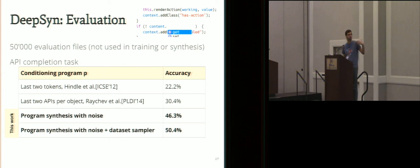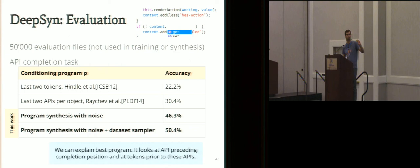The model that we synthesized is far more precise. With program synthesis and noise handling, we actually guess about half of the APIs. These are very complicated APIs to predict in JavaScript - it has APIs declared in the current process we cannot know about. We can explain what this program does - it looks at tokens prior to this API.